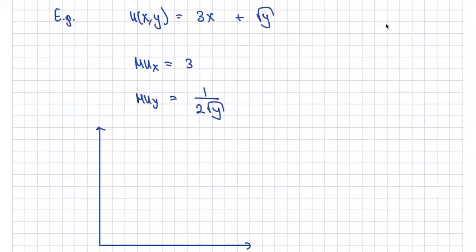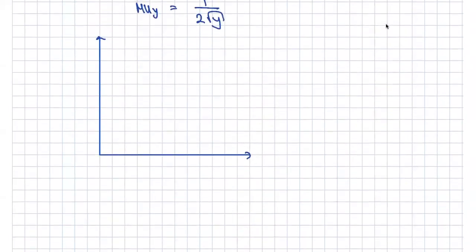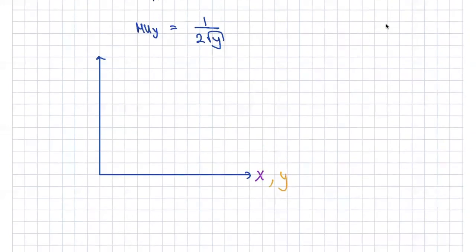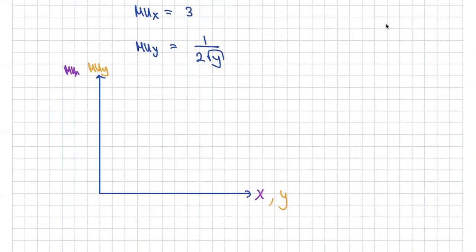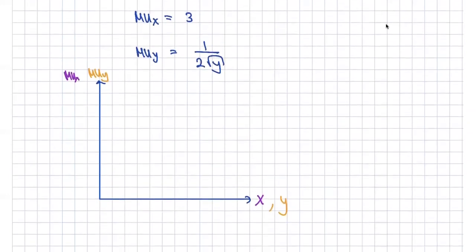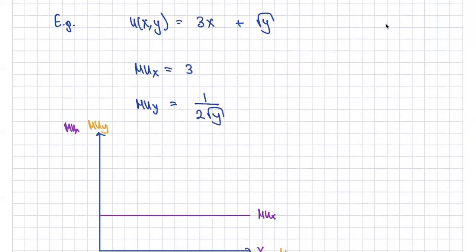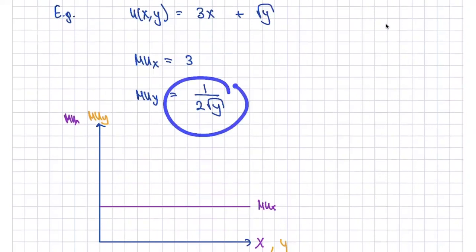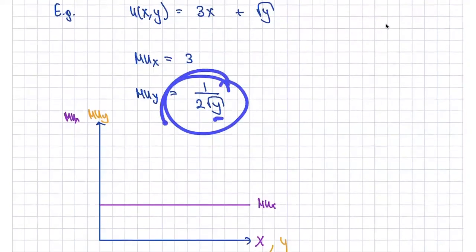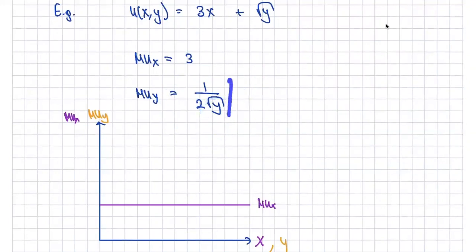I'm going to overload this graph a little bit. On the horizontal axis I have the amount of x and the amount of y. On the vertical axis I'm graphing both the marginal utility of y and the marginal utility of x. The marginal utility of x is just 3, so it's a flat horizontal line. The marginal utility of y — as y approaches zero, this function tends to infinity, and as y grows large, it tends to zero — so it slopes downward like a concave function's derivative.